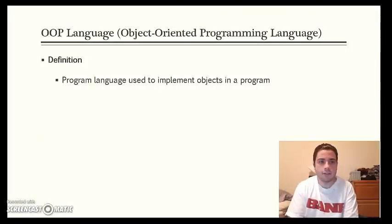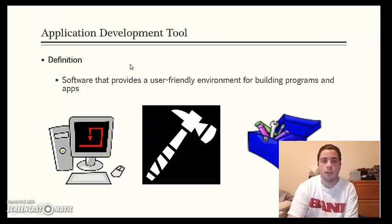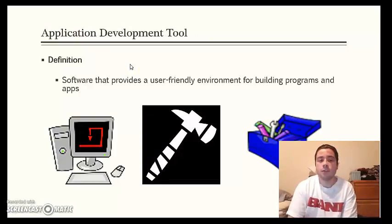Hello class, my name is Kyle O'Donnell. In a moment I'm going to go over the benefits of object-oriented programming as well as application development tools. But before I get into that, I wanted to give you guys a brief definition of what both those terms mean. OOP language, also known as object-oriented programming language, is a program language used to implement objects in a program. An application development tool is software that provides a user-friendly environment for building programs and apps. So with application development tools, that's going to make the developer have an easier time building their program.